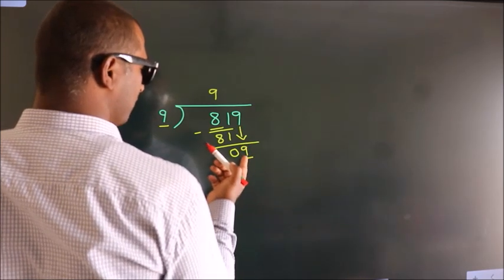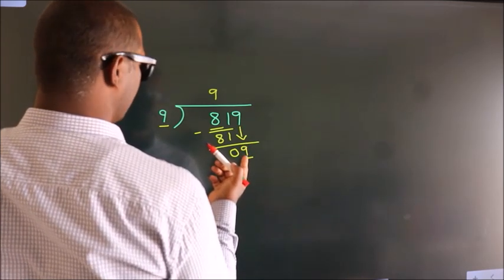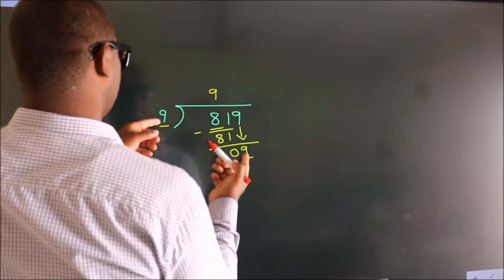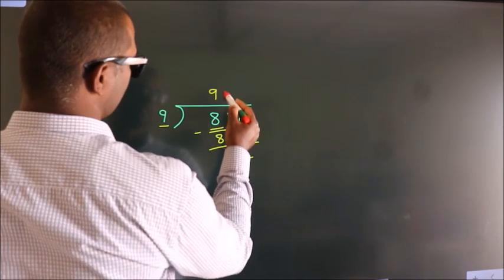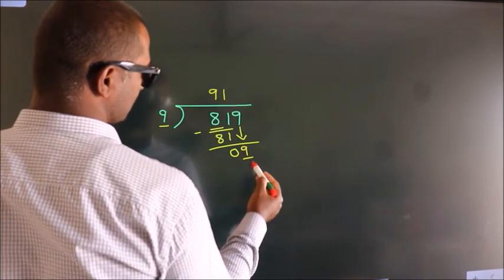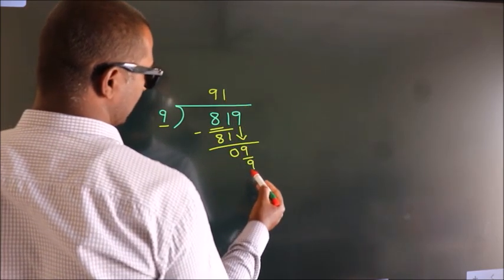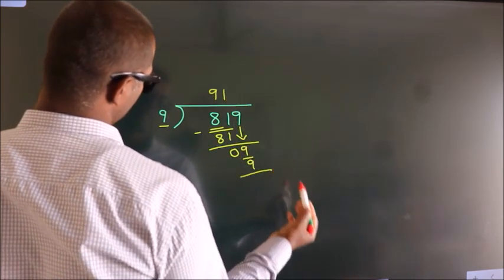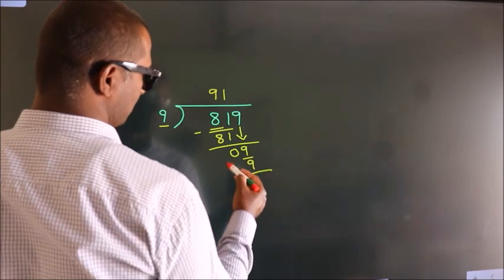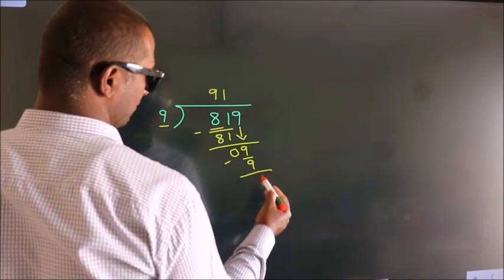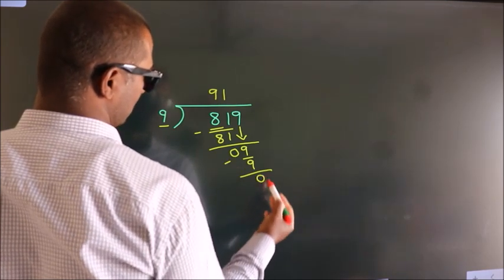When do we get 9 in the 9 times table? 9 ones are 9. Now we subtract, and we get 0.